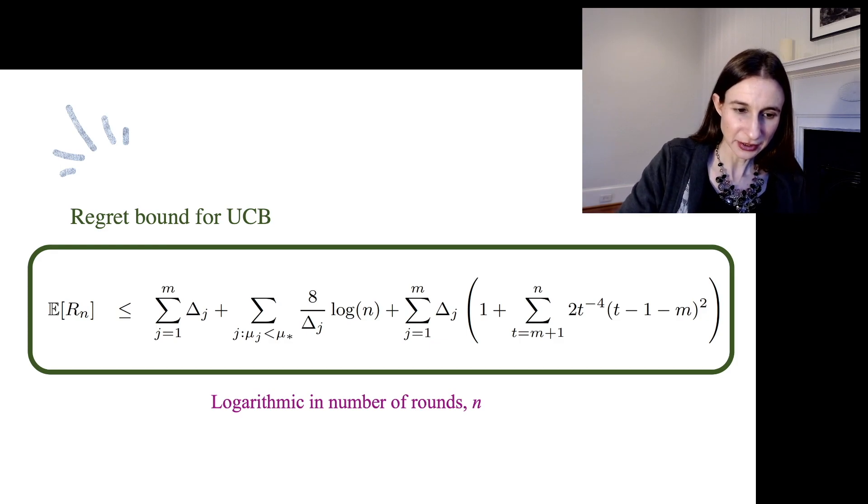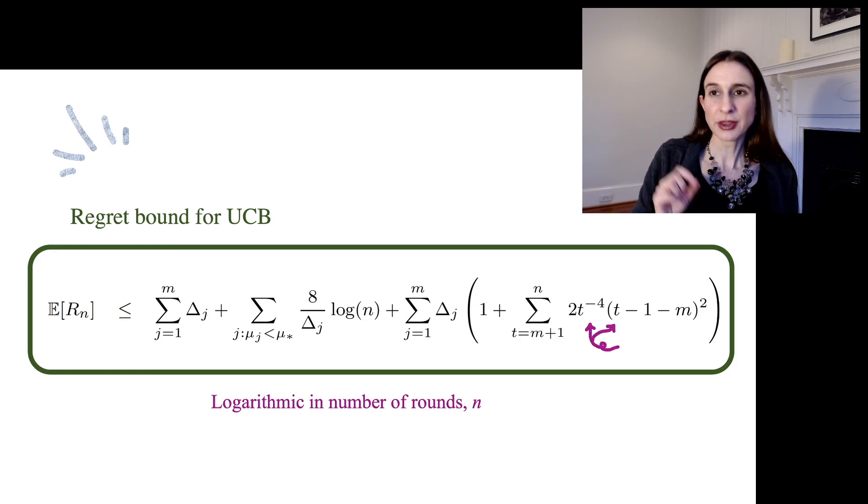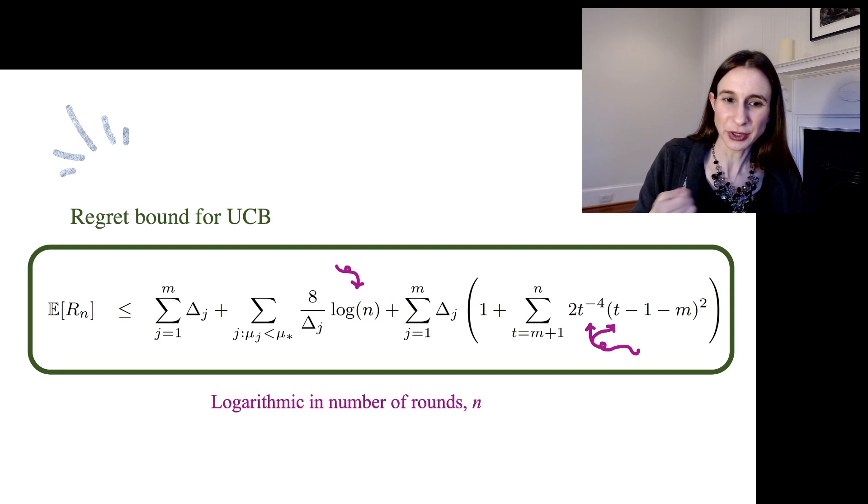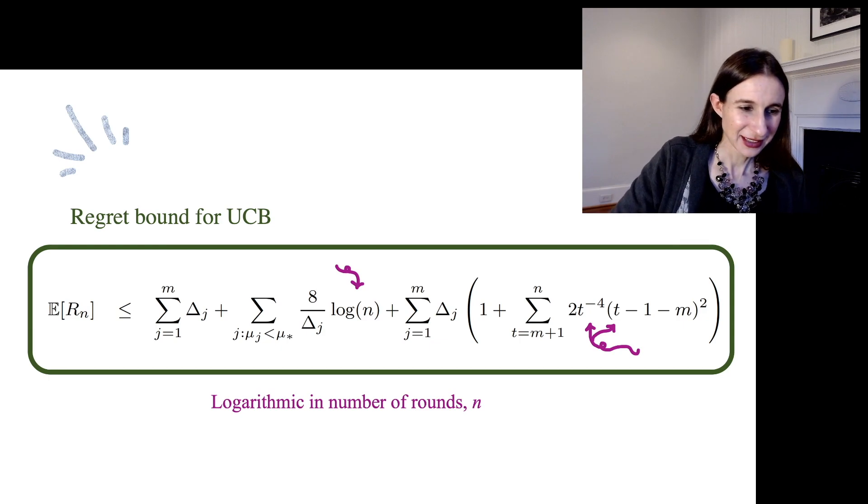And the third term, if you look at that third term, it's a sum over terms that it's like t to the negative fourth times like a t squared. And so that's less than order 1 over t, so again, logarithmic in the number of rounds.